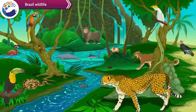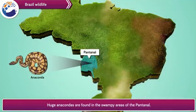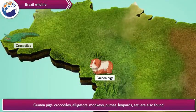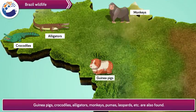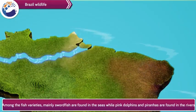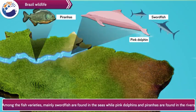Wildlife in Brazil: Brazil is considered to have the greatest biodiversity in the world. Huge anacondas are found in the swampy areas of Pantanal. Guinea pigs, crocodiles, alligators, monkeys, pumas, leopards, etc. are also found. Among the fish varieties, mainly swordfish are found in the seas, while pink dolphins and piranhas are found in the rivers.